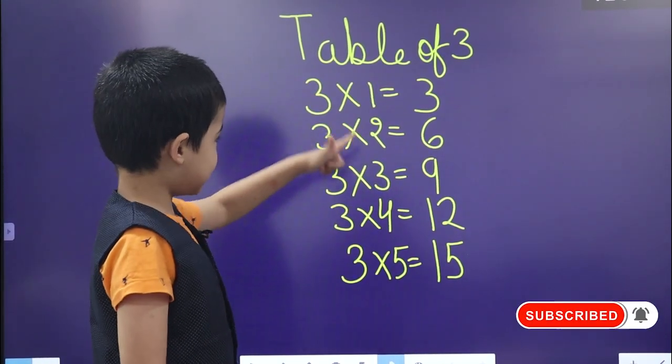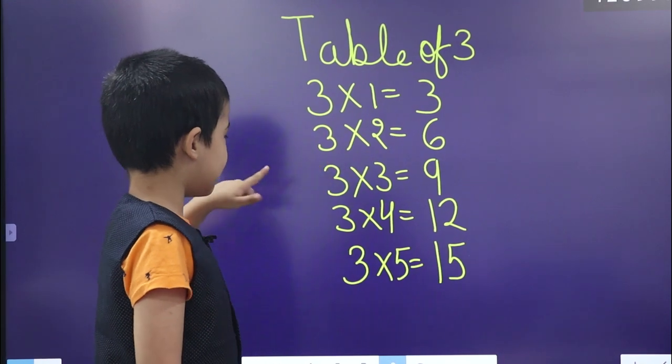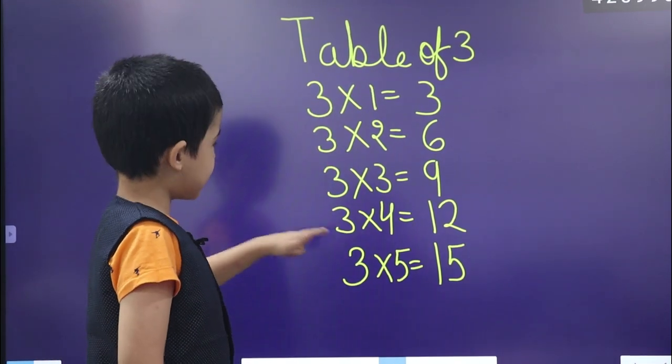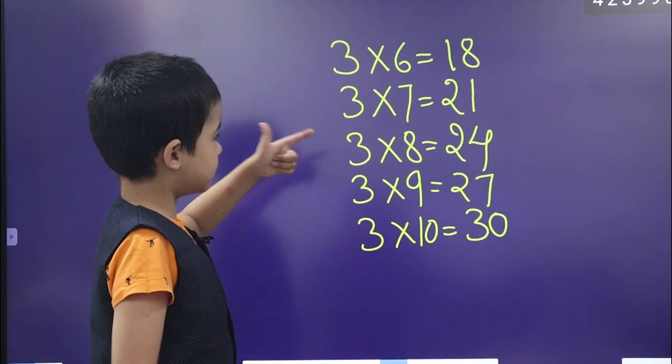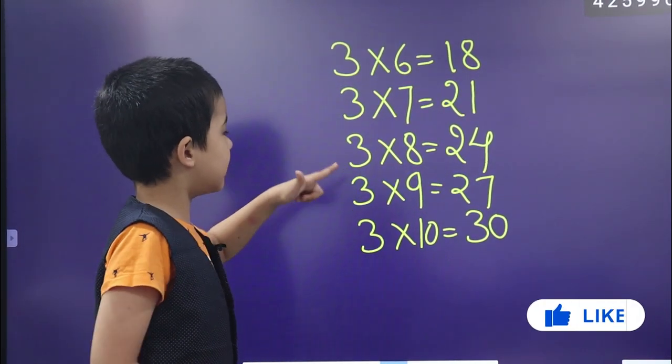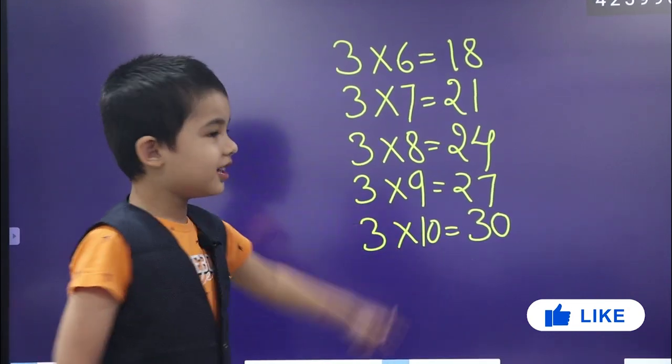3 times 1 equals 3, 3 times 2 equals 6, 3 times 3 equals 9, 3 times 4 equals 12, 3 times 5 equals 15, 3 times 6 equals 18, 3 times 7 equals 21, 3 times 8 equals 24, 3 times 9 equals 27, 3 times 10 equals 30.